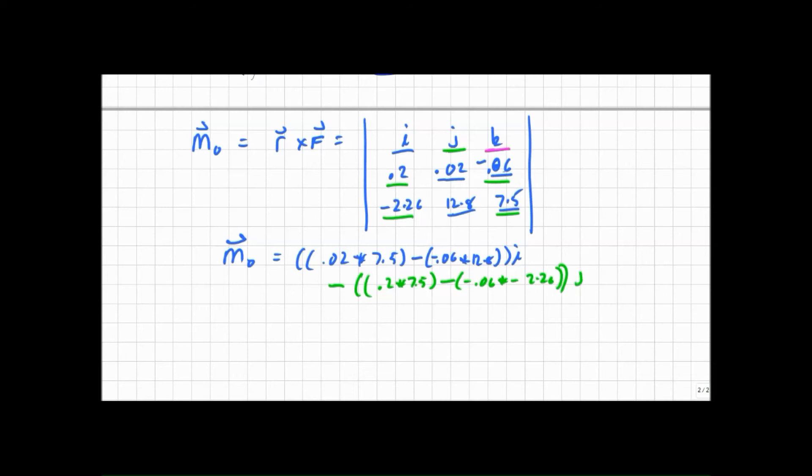And for the last piece of it, for our k, we're going to ignore that right-hand column for the numbers, and we're going to do 0.2 times 12.8, minus 0.02 times minus 2.26, that's k.